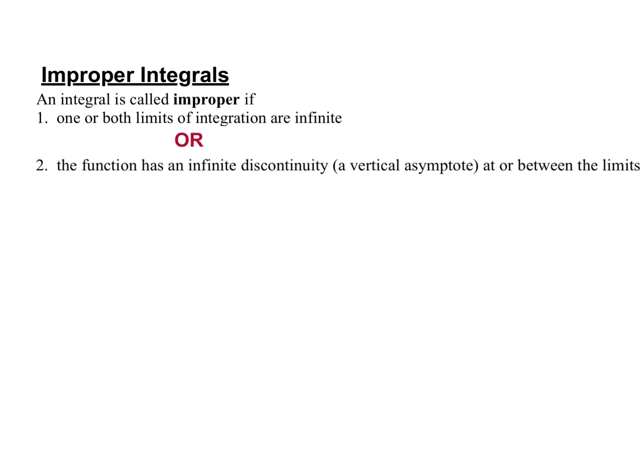This is in your book. There are two different ways when we consider an integral improper. The first one is really straightforward — you're going to see one or both of the limits of integration are going to be infinite, positive infinity or negative infinity. If we're integrating and either the lower limit is negative infinity, the upper limit is infinity, or it is from negative infinity to infinity, that is considered an improper integral. You'll see an infinity on the integration symbol.